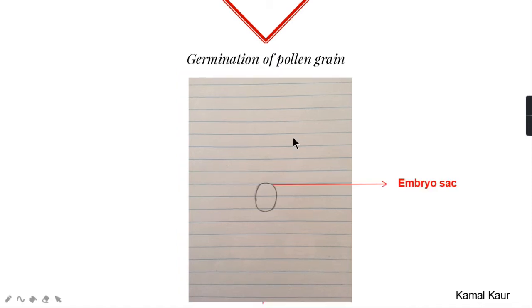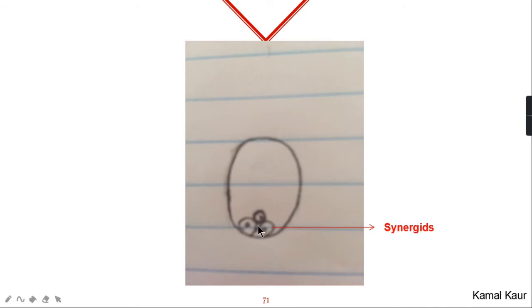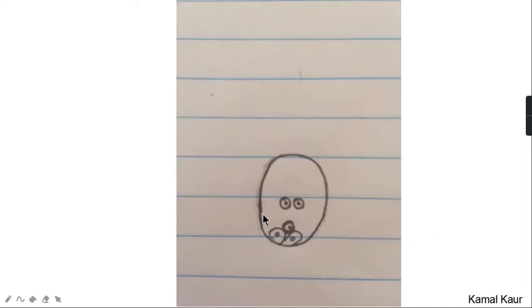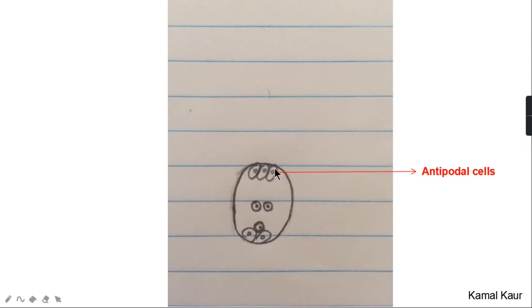Embryo sac which is present inside the ovule has two cells at the bottom which are called synergids. Above the synergids there is one more cell which is the egg or ovum. Function of synergids is to protect this egg. In the center there are two cells which are called two polar cells or two polar nuclei. These two polar nuclei and the ovum all three are haploid means they have half the number of chromosomes in them. At the top there is a set of three cells which are called antipodal cells.